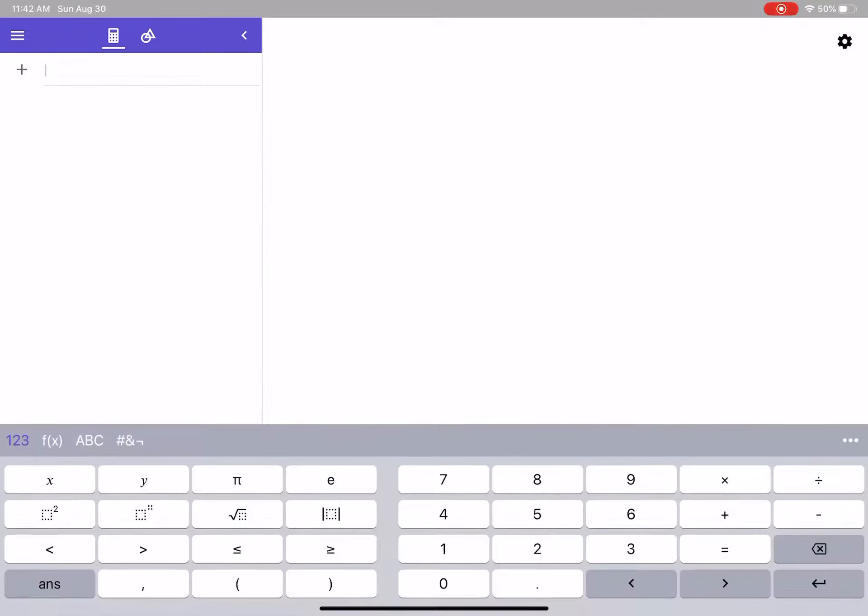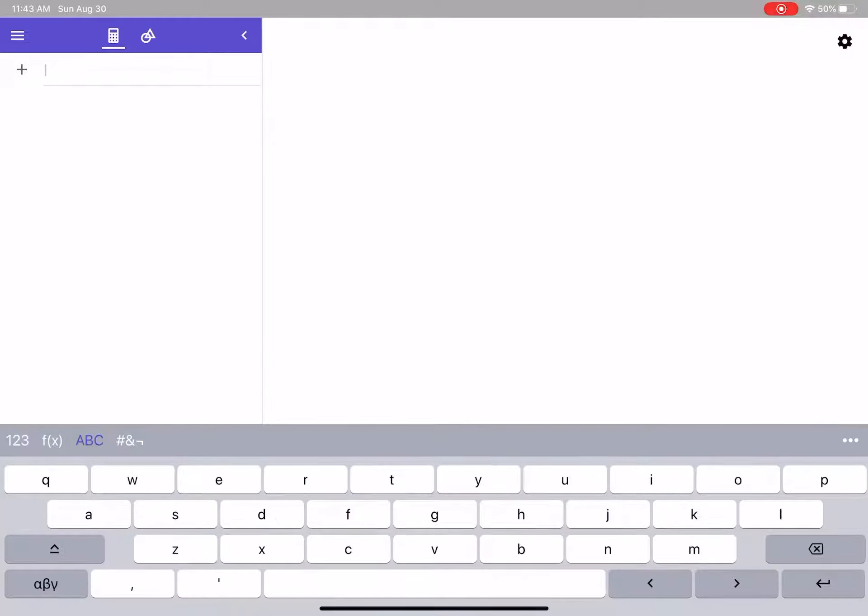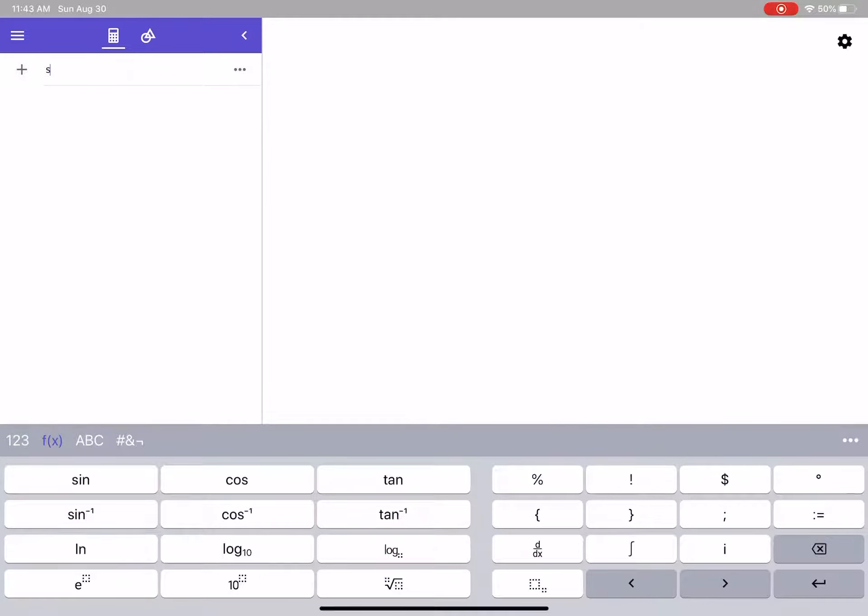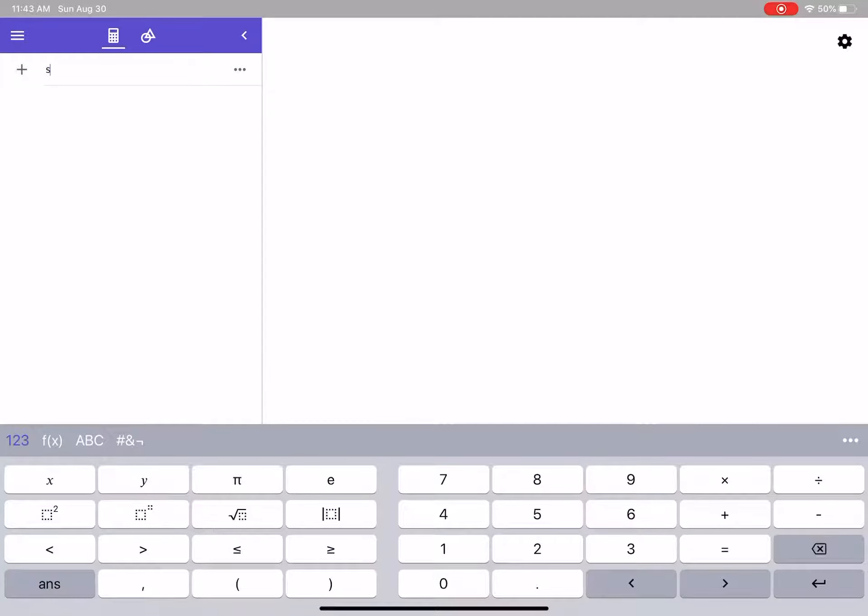I am going to type in that equation that we had before, but I'm probably just going to use x's instead of t's here. So let's say that I call this s(x), close those parentheses, should be an equal sign around here. It was negative 4.9x² and then plus 100. I'm going to hit enter on that one.